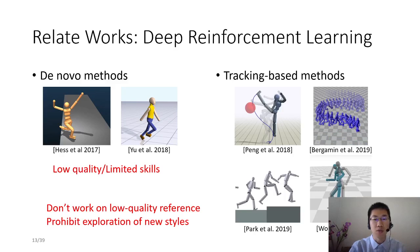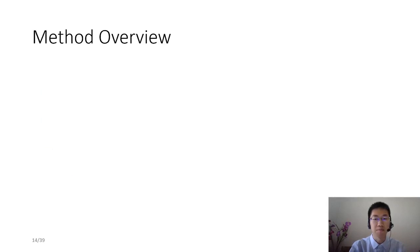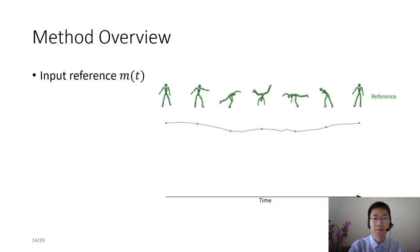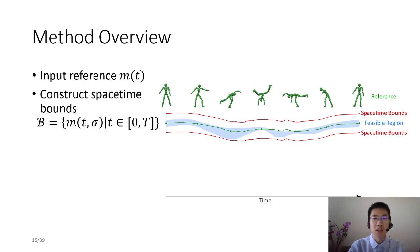Now let's go into an overview of our method. Our method takes reference motion as input, denoted as mt. Then we construct spacetime bounds from input reference. At mt, spacetime bounds restrict states within a region of size sigma centered at mt. I will detail the construction of spacetime bounds later. These spacetime bounds restrict and shrink the feasible region of the target motor skill.